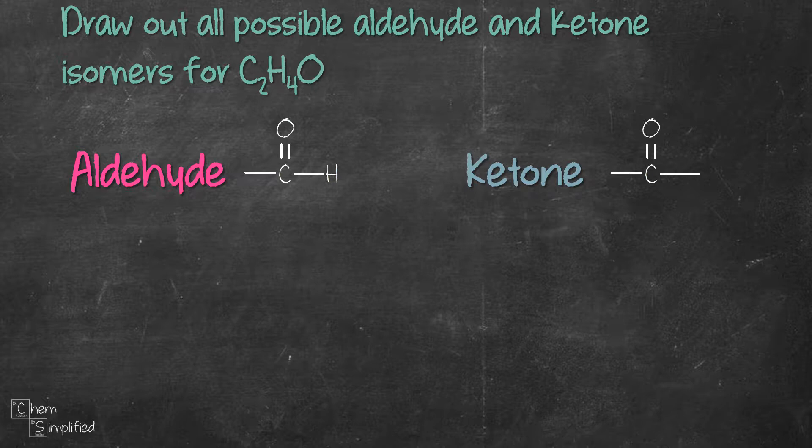So the difference between aldehyde and ketone is that they both have a carbonyl group, but in an aldehyde there's a hydrogen connected next to it, whereas in a ketone both sides are carbon.